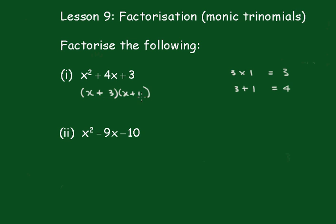The order doesn't matter, you can have (x + 1)(x + 3), same thing. Now this one, what two numbers multiply together to give negative 10 and add up to give negative 9.